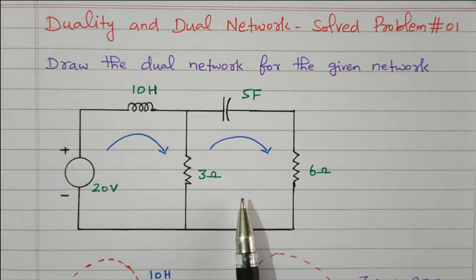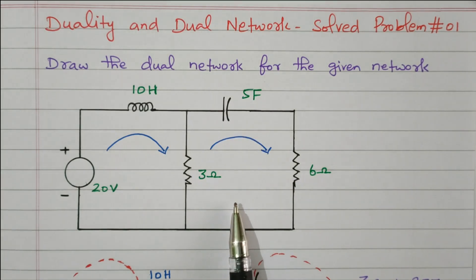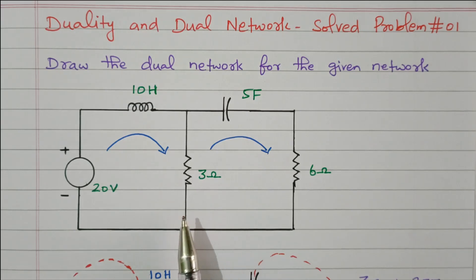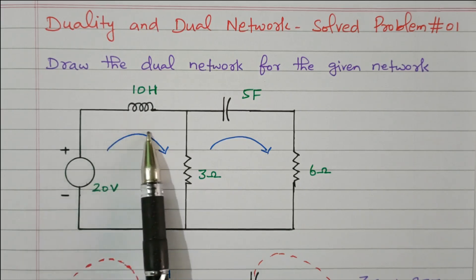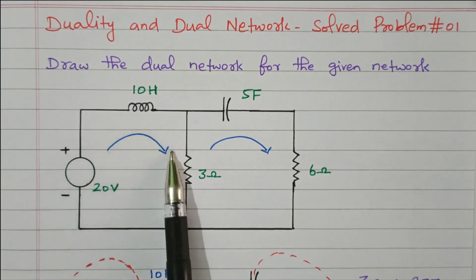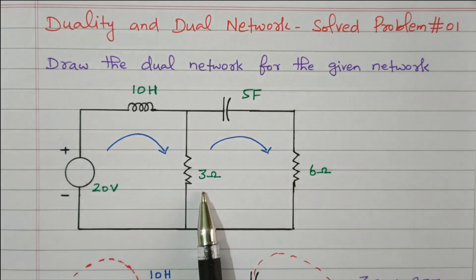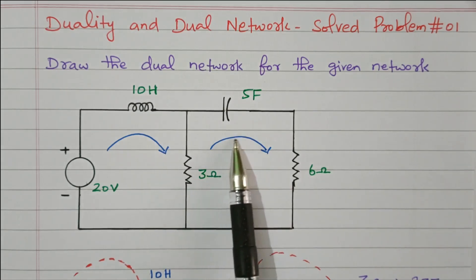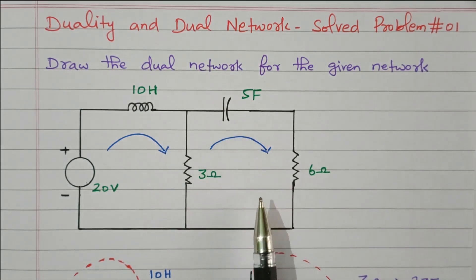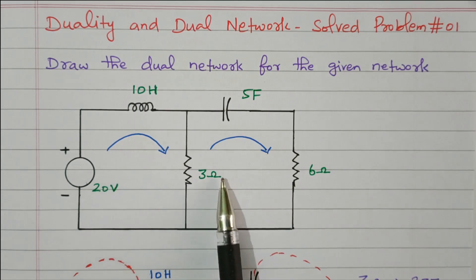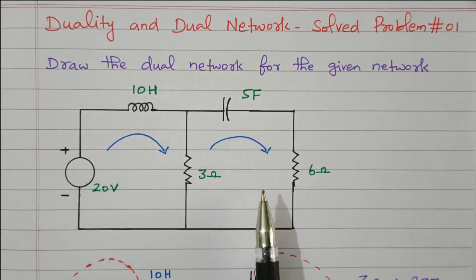Step 1 is we need to put a dot for every loop in the circuit. First, we will identify what loops are available. This is loop 1 — the first loop. A loop is nothing but a closed circuit. This is the second loop. So, we need to put a dot for the first loop as well as the second loop.